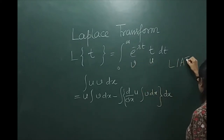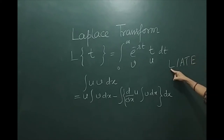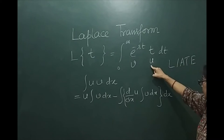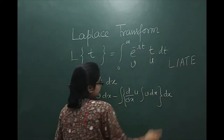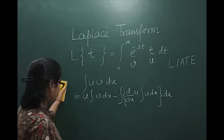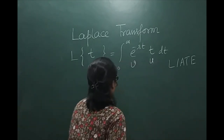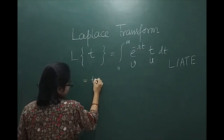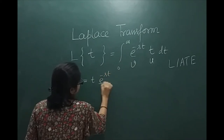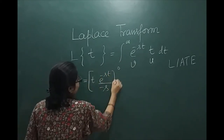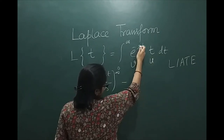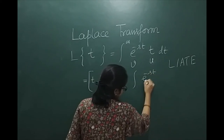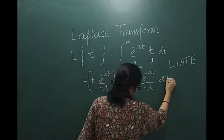Now let us do the integration by parts. First function t multiplied by the integral of the second function — e^(-st) divided by (-s) — evaluated from 0 to infinity, minus the integral of: d/dt of t, which is 1, times the integral of e^(-st), which is e^(-st) divided by (-s), from 0 to infinity dt. Now you can see: if you put infinity this part will be 0, and if you put 0 here this part will also become 0.